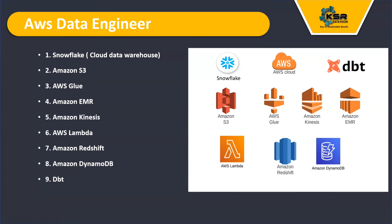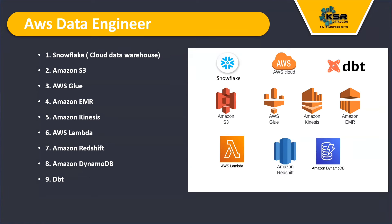Once you understand Snowflake, learn about Amazon S3 — a storage service where you store all different types of data and access them through AWS services. Then learn AWS Glue, which is used to build ETL jobs — it's serverless and used to process large-scale data without worrying about clusters or servers. Then learn Amazon EMR (Elastic MapReduce), which is used to process data in a distributed form similar to Hadoop or Spark — processing large amounts of data in small chunks for big data workloads.